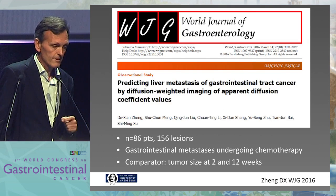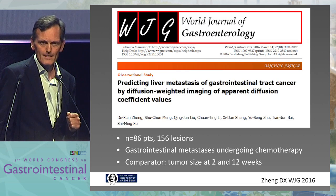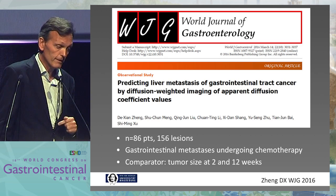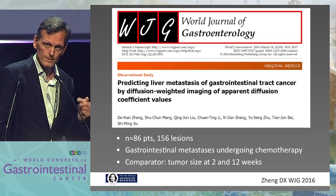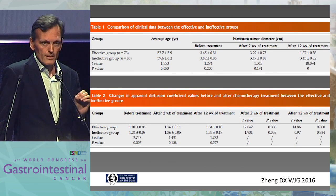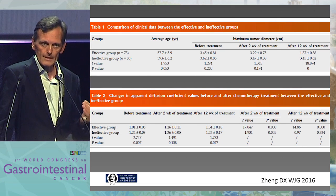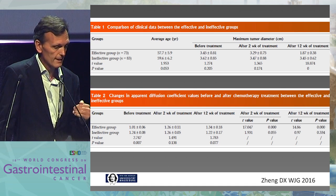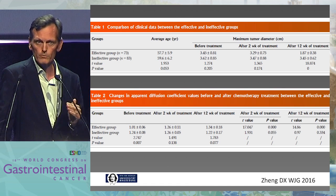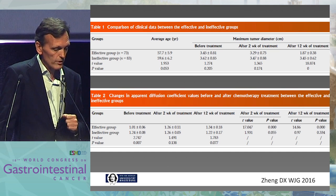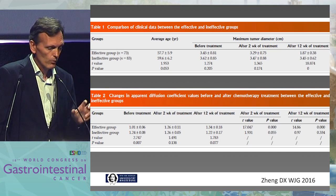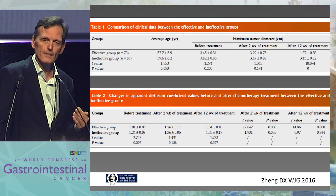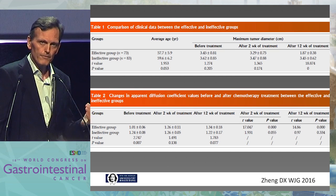Much more interesting to all of us is therapeutic monitoring. This is a study of gastrointestinal cancer liver metastases, followed under chemotherapy at two weeks and 12 weeks by diffusion-weighted imaging — 85 patients, 156 lesions. The control is tumor size. What you see is an effective group and an ineffective group. In the effective group, you have tumor shrinkage after 12 weeks, not after two weeks. With the ADC value, even at two weeks, this group was able to show a highly significant change — a p-value approaching zero — if the treatment was effective.